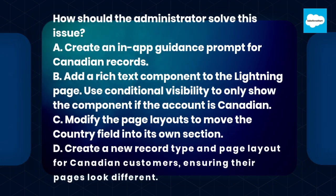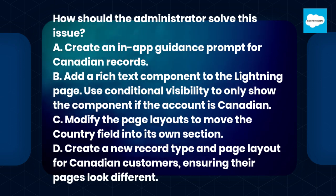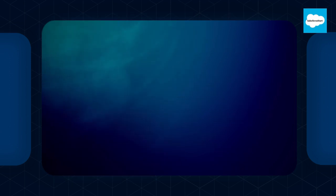A. Create an in-app guidance prompt for Canadian records. B. Add a rich text component to the Lightning page. Use conditional visibility to only show the component if the account is Canadian. C. Modify the page layouts to move the country field into its own section. D. Create a new record type and page layout for Canadian customers, ensuring their pages look different.